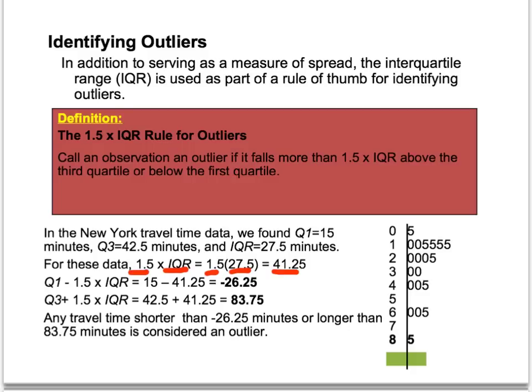Adding 41.25 to Q3, anything bigger than 83.75 would be considered an outlier. Subtracting from Q1, anything below negative 26.25 would be an outlier. Our lowest value is 5, so nothing negative occurs. However, the value 85 is bigger than 83.75, so that number is considered an outlier — the only outlier in the data set.